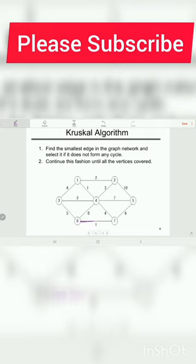So, the smallest edge in the graph is 1 and this 1, and the next smallest edges are 2 and this 2, and the next small edge is 3.